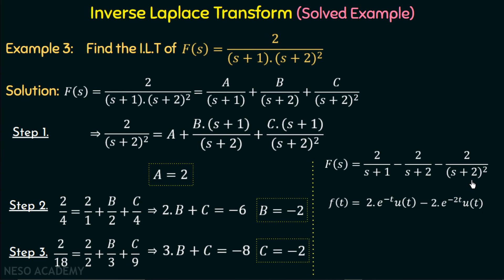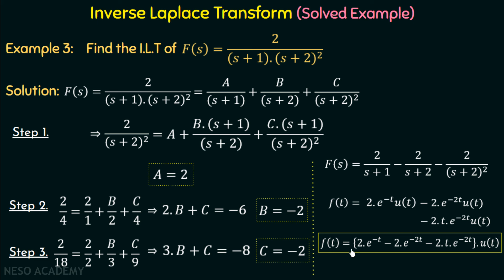We discussed one example based on the frequency shifting property in the previous lecture. If we assume the function 1/s², then the inverse Laplace transform of 1/s² equals t. When there is shifting in the frequency domain, an exponential function is multiplied to the time-domain function. So the inverse Laplace transform of 2/(s+2)² is 2t·e^(−2t)·u(t), where t comes from 1/s² and e^(−2t) is due to the frequency shift by a factor of two. Taking u(t) common, f(t) equals [2e^(−t) − 2e^(−2t) − 2t·e^(−2t)]·u(t).